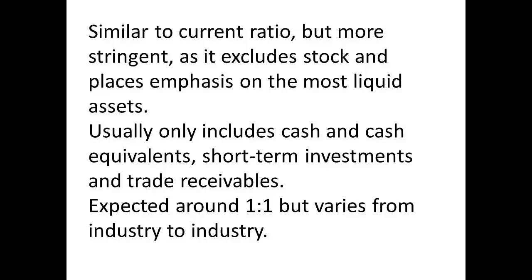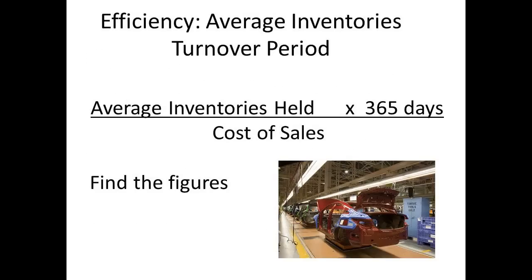The expected result is around 1 to 1, though it may vary by industry. If the answer were less than 1 to 1 — for example 0.5 to 1 — this shows insufficient liquid assets to cover current liabilities. Now we turn to measures of efficiency, which are expressed in terms of days. The average inventory turnover period is determined as the average inventories held divided by the cost of sales, then multiplied by 365 days.